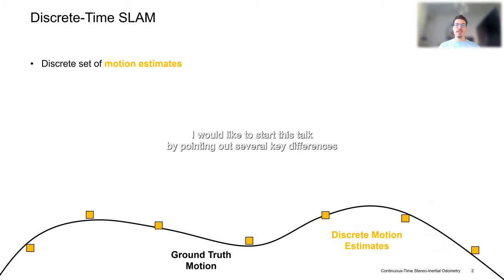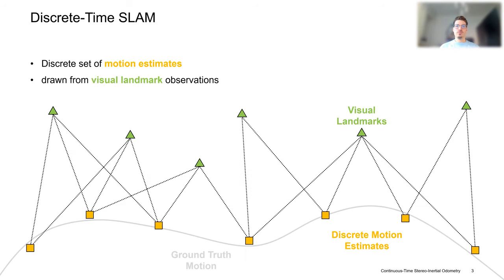I would like to start this talk by pointing out several key differences between conventional discrete time SLAM methods and our proposed continuous time approach. In particular, most conventional approaches estimate their egomotion over a discrete set of motion-parameterizing states. These states are commonly estimated from geometric information about the surrounding environment, so-called visual landmarks.